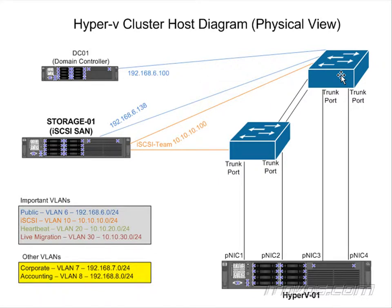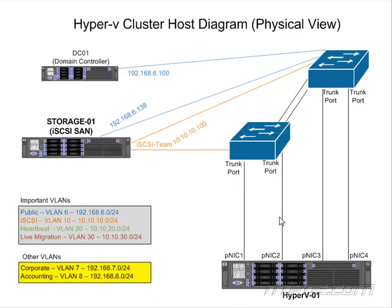The goal is to eliminate single points of failure. If one switch goes down, our virtual machines and host can still communicate through the NICs connected to the other switch, so our host doesn't go down. With our storage, we're going to be using an iSCSI SAN — we're going to have one NIC connected to one switch and another NIC connected to another switch for teaming. And of course, we're going to have our domain controllers on our network as well.